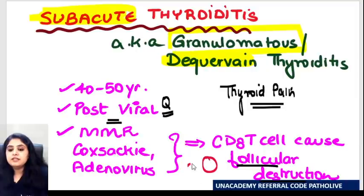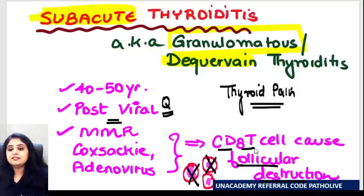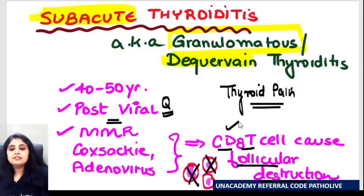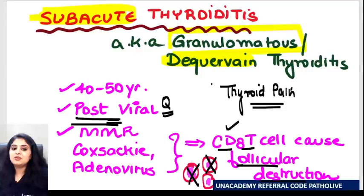So what did we learn? We learned that these are the follicles filled with colloid, and how are they getting destroyed? They are getting destroyed by the CD8 T cells. Now can you see that colloid will be eaten up by the giant cells? So the CD8 T cells cause the destruction — it's post-viral, associated with MMR, adenovirus, and coxsackie — and it is associated with thyroid pain.